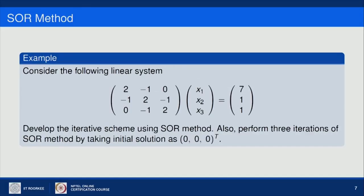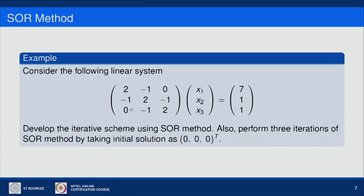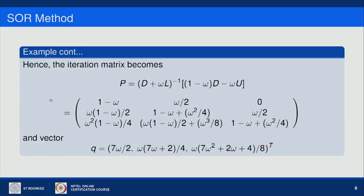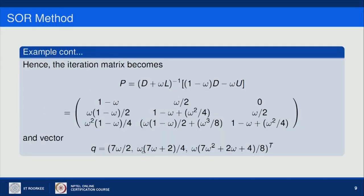If we solve this particular example using the SOR scheme — it is a 3 by 3 system — we perform 3 iterations of SOR with the initial solution as (0, 0, 0). From the coefficient matrix we can write L, D, and U. The iteration matrix P becomes a 3 by 3 matrix, and vector Q is a 3 by 1 column vector with entries such as 7ω/2. The iteration matrix P and vector Q both contain omega in all terms.